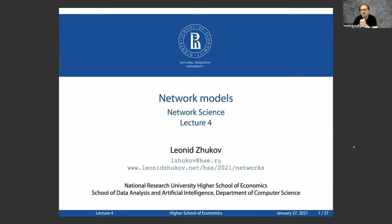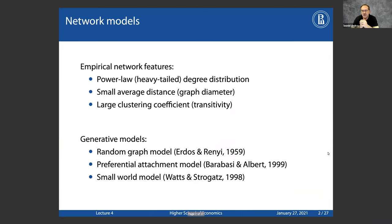Good evening, let's get started. We're going to continue talking about network models. Last time we talked about the random graph model. Today we're going to spend most of the time talking about the preferential attachment model by Barabási and Albert, and then we'll also talk about the small world model. Those three models cover the entire spectrum of models used in network modeling today — these are from 1998-1999, so they're the parents and grandparents of today's models.